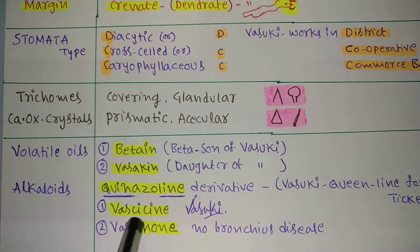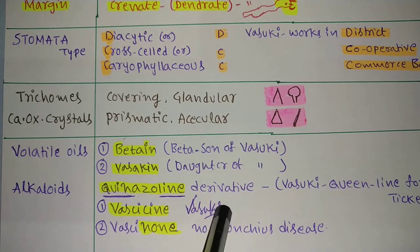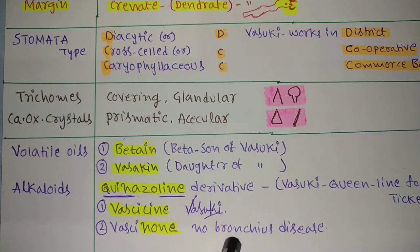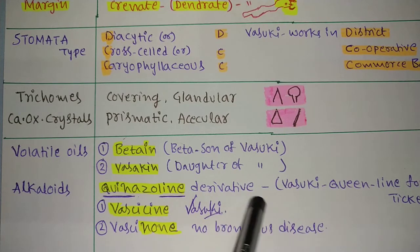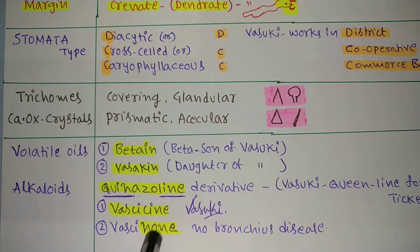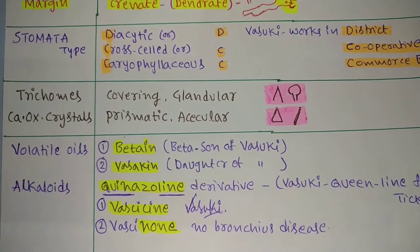Next, this alkaloid quinazoline derivative is vasicine. Vasicine - see here, sign. Sign, you have to remember vasicine, the signature of Vasuki. And next is vasicinone. Nun - why is it called nun? If any person has asthma or bronchial problems, all these asthmatic, bronchial problems will be cured completely. It becomes none by using vasicinone. This alkaloid vasicinone is responsible for all bronchial problems. It resolves all bronchial problems.